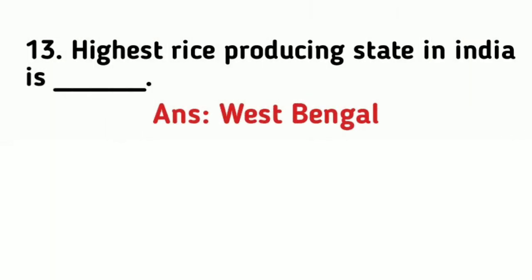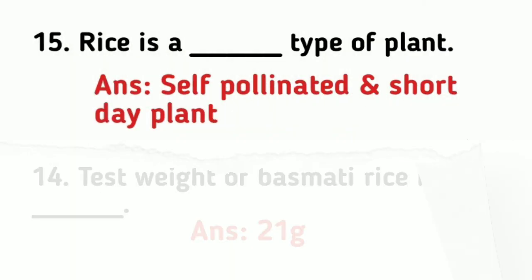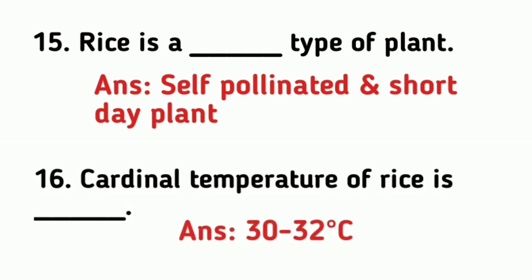The highest rice producing state in India is West Bengal. The test weight of Basmati rice is 21 grams. Rice is a C3 type of plant, self-pollinated and short day plant. The cardinal temperature of rice is 30 to 32 degrees Celsius.